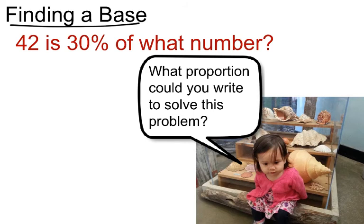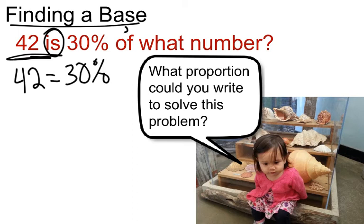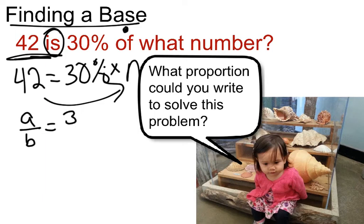42 is 30% of what number? Any time you have 42 is or a number is the percent, remember that is means equals. So if I just wrote this out, 42 equals 30%, and we remember of means to multiply times what number, I can use N. Then you can kind of see, well, I have 42 equals the percent. 42 does not equal the N. So in this case, when I rewrite my proportion, I'm solving for the base.